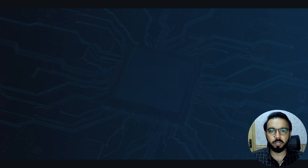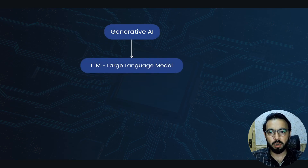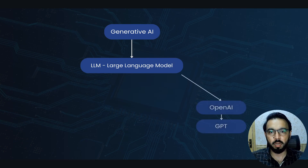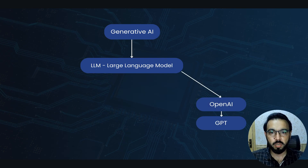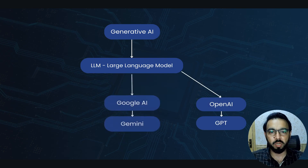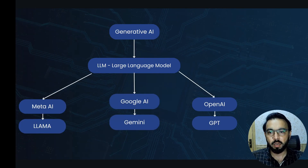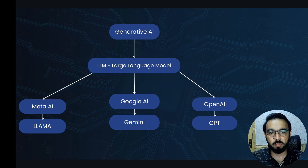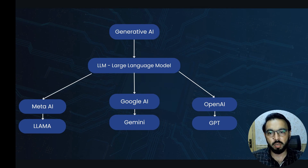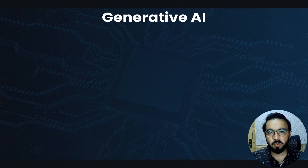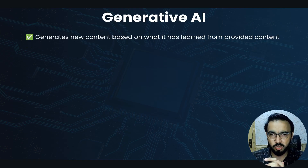In this video we'll briefly go through what is generative AI, what is a large language model also known as LLM, and how three big companies like OpenAI, Google AI, and Meta AI have built their own versions of LLM called GPT, Gemini, and Llama. So let's get started.